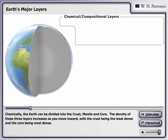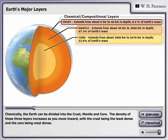Chemically, the Earth can be divided into the crust, mantle, and core. The density of these three layers increases as you move inward, with the crust being the least dense and the core being the most dense.